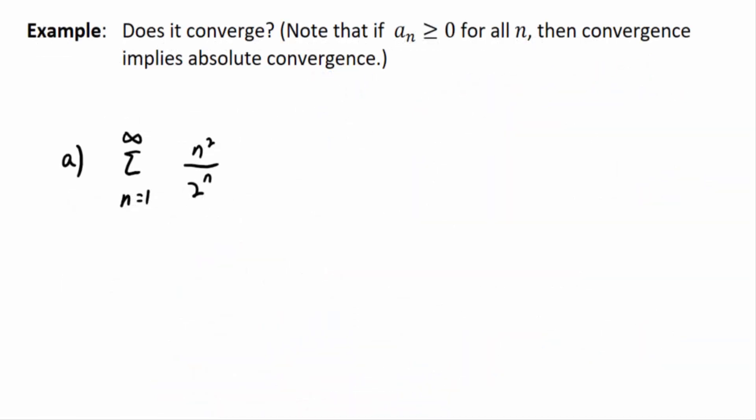So, here we go. Part A, the sum N equals 1 to infinity, N squared over 2 to the N. Does it converge? Note that AN is greater than 0 for all N. Note that if that's true, then convergence implies absolute convergence. So, in other words, if you're summing positive terms, you don't really need the absolute values. The ratio test says you want to examine this ratio.